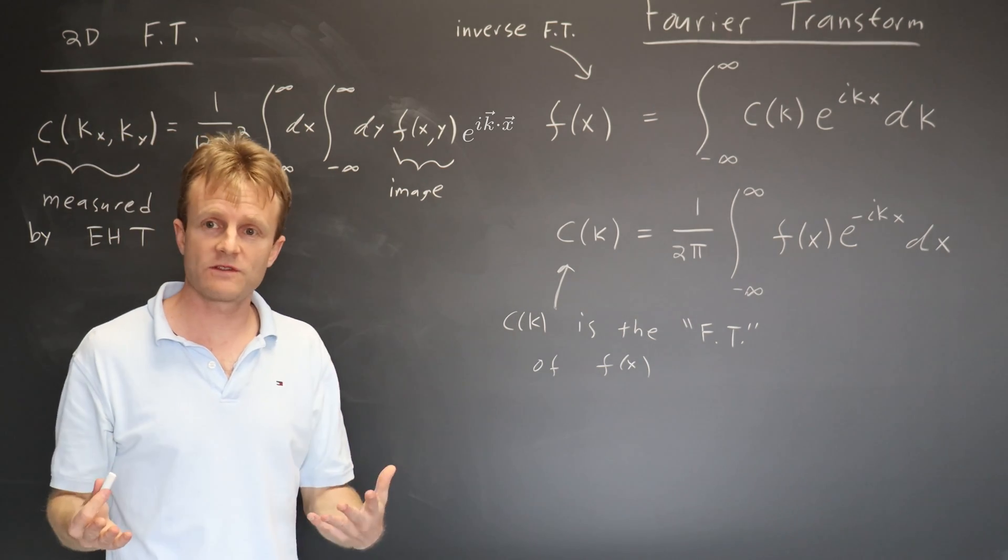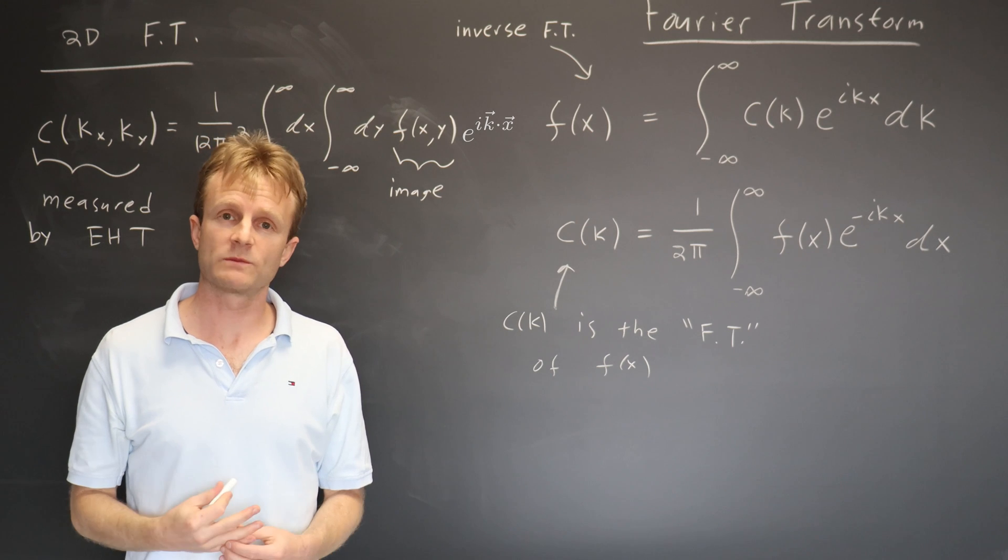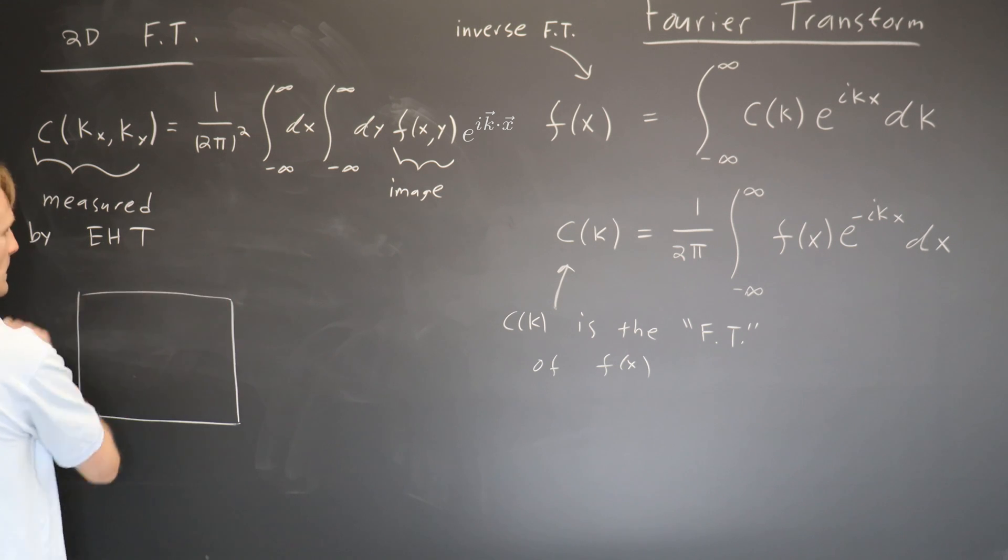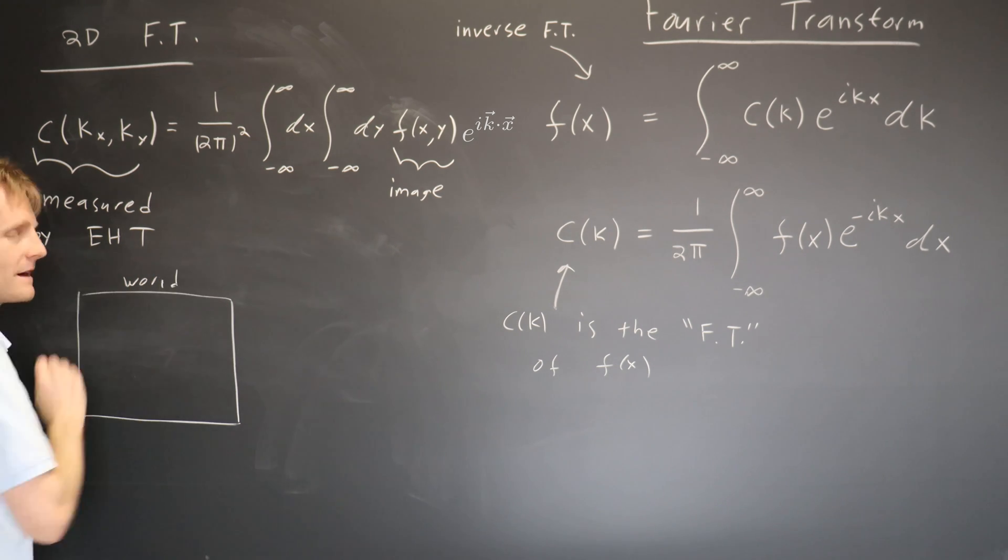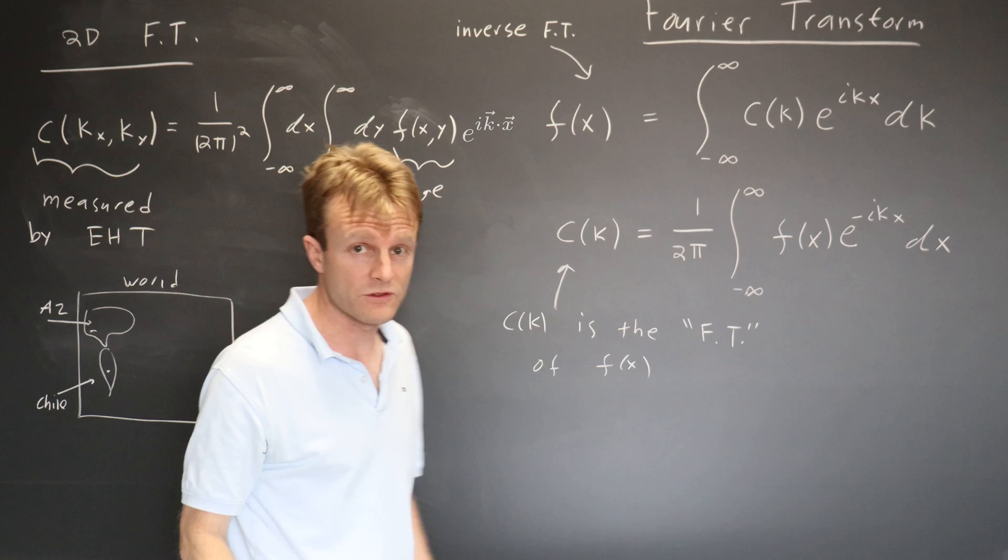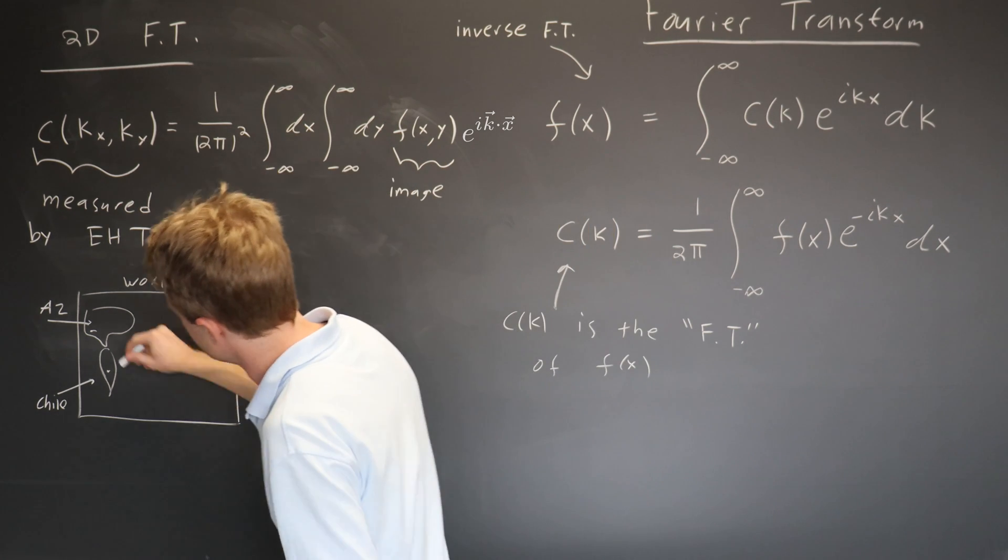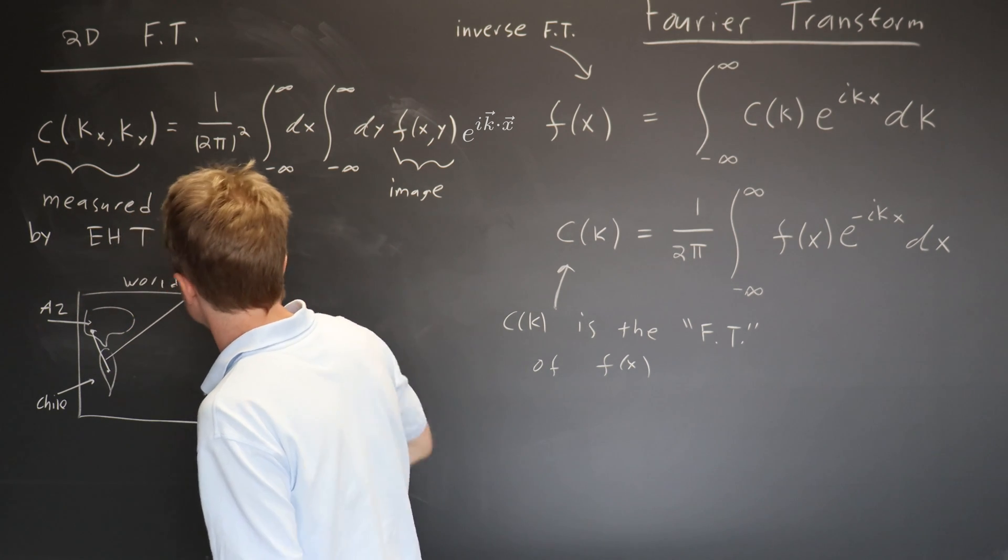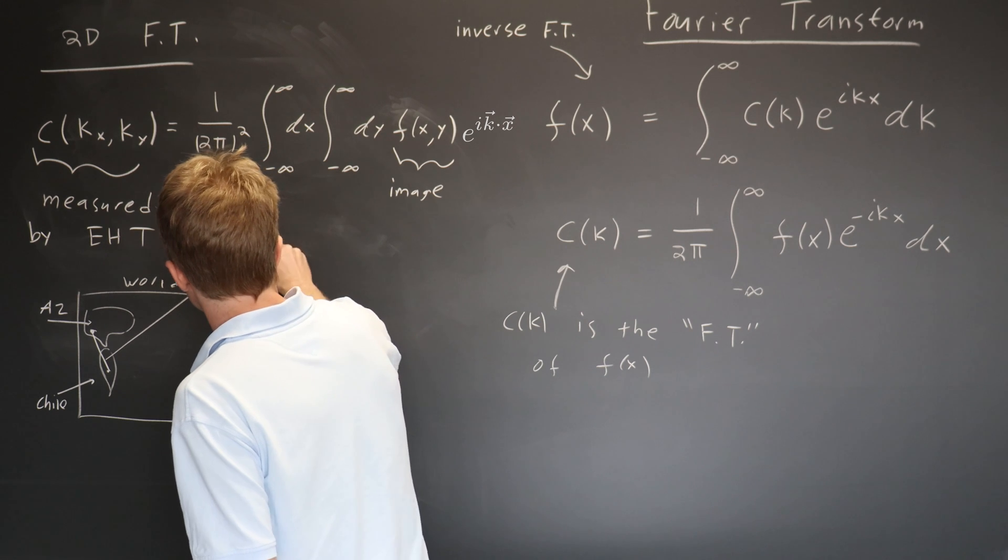There's a lot to go into here, but the gist of it is the way this measurement works is it has many telescopes all around the world. Here's my world map. I'm not going to try to draw continents, but let's just imagine somebody's here in Chile, and maybe another telescope here in Arizona. Arizona was heavily involved in the Event Horizon Telescope Collaboration, and the distance between these two telescopes goes into, you can make some vector, vector from Arizona to Chile,